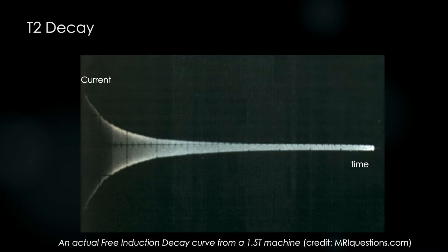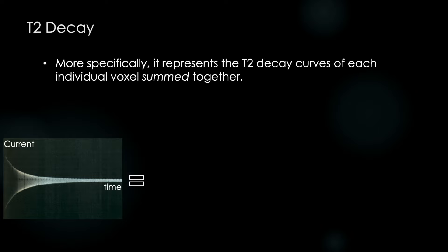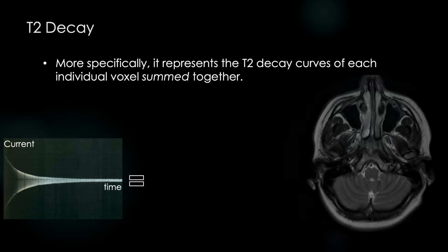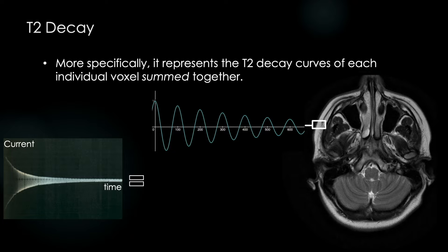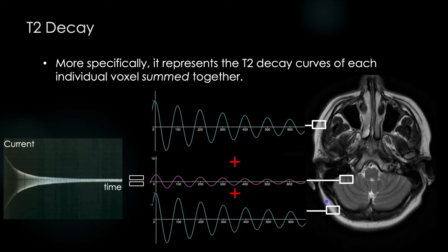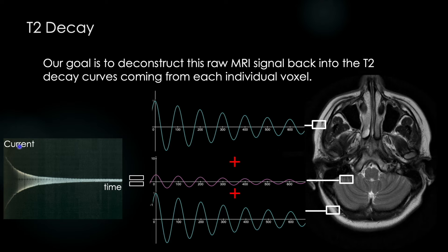And we're not making this up. This is an actual free induction decay curve from a 1.5 Tesla machine by Dr. Elster over at MRIQuestions.com. But more specifically, it represents the T2 decay curves of each individual voxel summed together. And this is very important. We have a slice through the body. In this case, the face and brain. And this current that we're measuring comes from every single voxel. For example, this voxel here containing mostly fat contributes this decay curve. This voxel here that is mostly soft tissue may contribute a decay curve that looks like this. And finally, we go back here to the posterior scalp. And this voxel, again containing mostly fat, will give us another T2 decay curve. But we can't see these individual curves. We can only see all of these added up together. And so that's our goal.